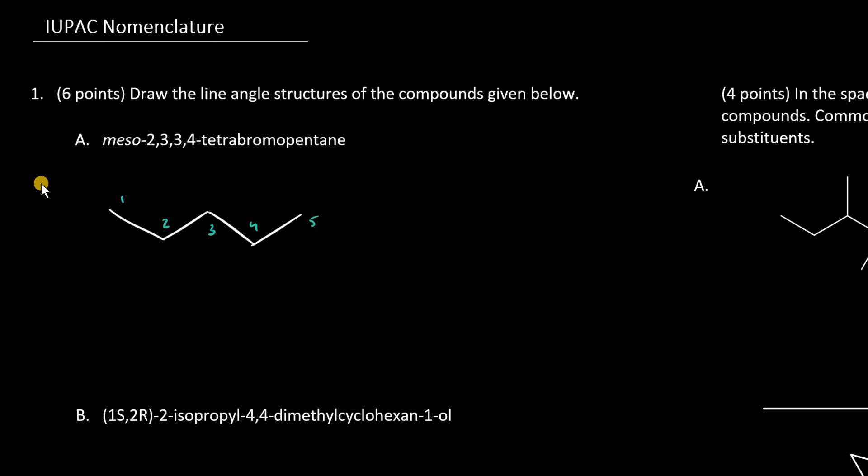With meso compounds, there are two dead giveaways. For one, there is a plane of symmetry, or two, the chiral centers have opposite stereochemical designations. So let's take a look. We have bromines at carbon-2, two of them at 3, one of them at 4. So already, I imagine the plane of symmetry would be right here, down carbon-3, but let's draw this out.